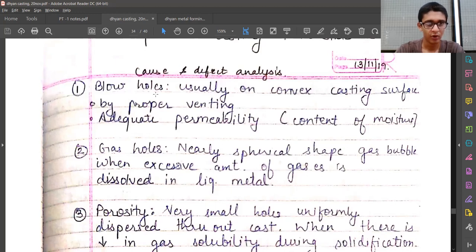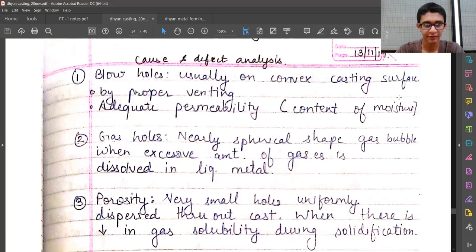The first one is blow holes, which are usually on convex casting surfaces. They can be removed by proper venting or adequate permeability, and permeability is directly related with the content of the mixture.